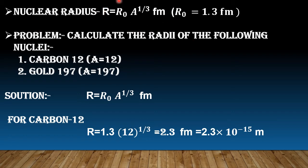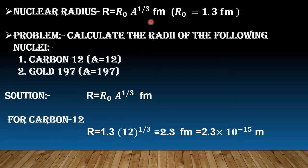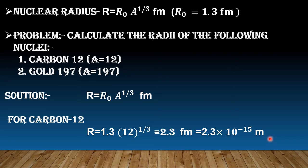So students, first let me give you a numerical based on the nuclear radius formula. The problem says: calculate the radii of the following nuclei — you have two nuclei, Carbon-12 and Gold-197, and you need to find the radius of both. I will show you Carbon first. The formula is R = R₀A^(1/3). You only need the mass number. R-naught value is 1.3 fermi and carbon's mass number is 12. Calculating gives you 2.3 fermi, which you can also convert to meters since 1 fermi = 10⁻¹⁵ meters.